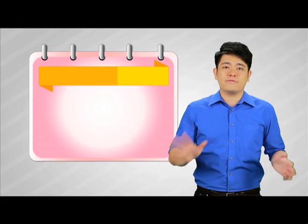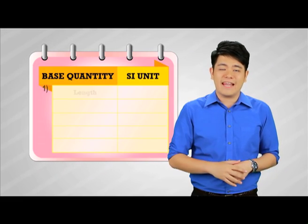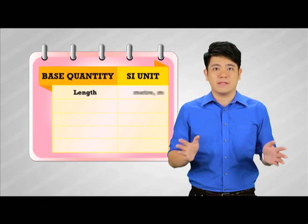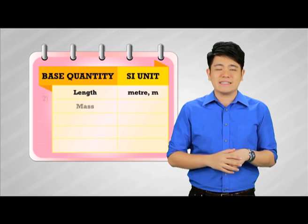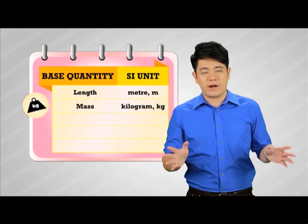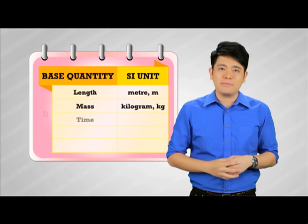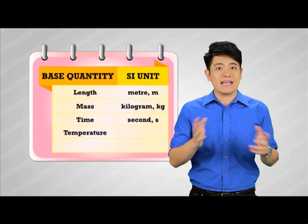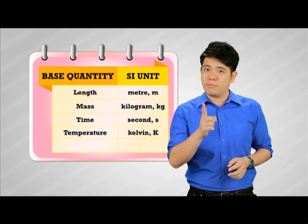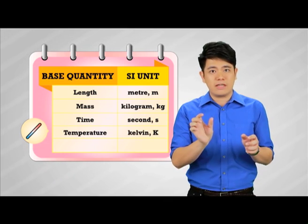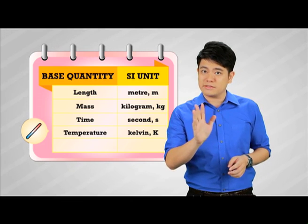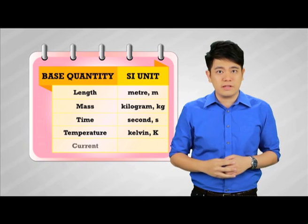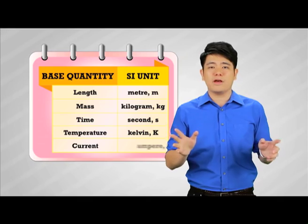But before we look at prefixes, we must know our base quantities. There are five base quantities. Number one, length — the SI unit is in meter. Number two, mass — the SI unit is in kilogram. Number three, time — the SI unit is in seconds. Number four, temperature — the SI unit is in Kelvin. Remember, temperature, the SI unit is in Kelvin and not Celsius. Number five, that's current — the SI unit is in ampere.